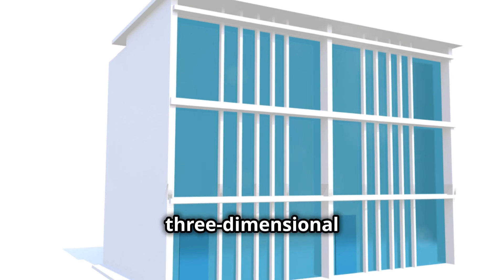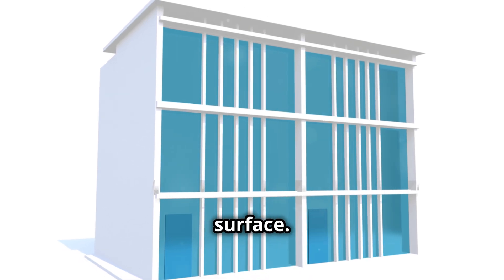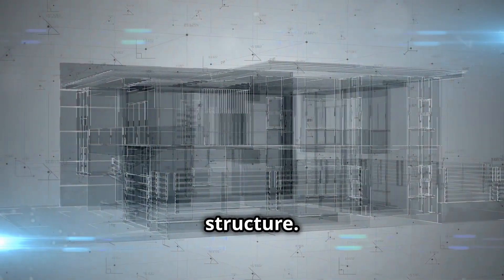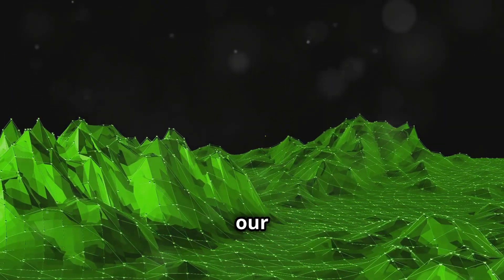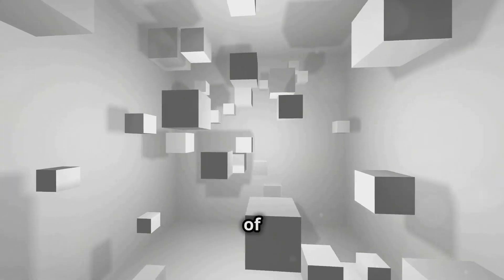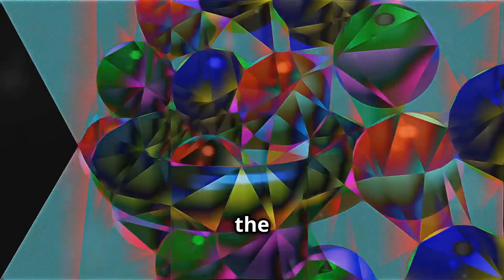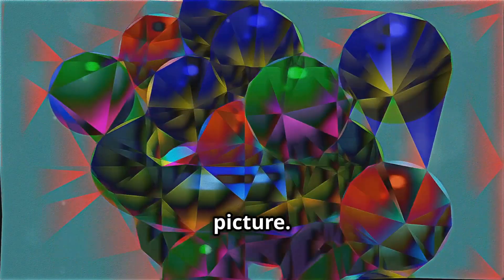Think of an architect's blueprint. It represents a three-dimensional building on a two-dimensional surface. The blueprint uses length and width to depict the building's layout, while height is implied, allowing us to visualize the complete structure. Similarly, our three-dimensional world can be thought of as a projection of a higher-dimensional reality.